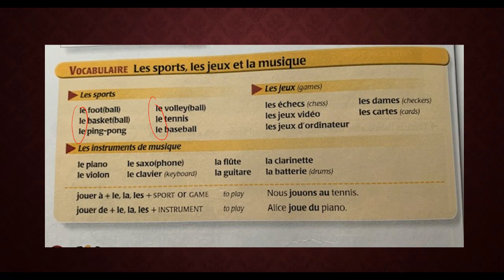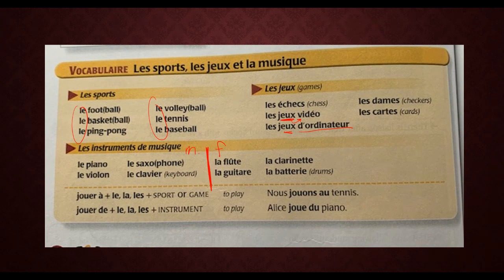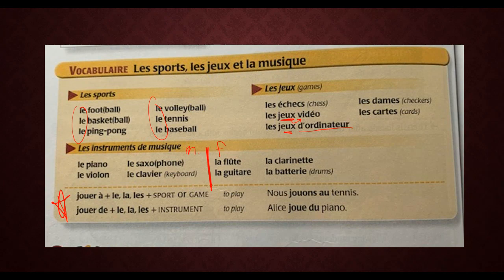Notice how jeux vidéo and jeux d'ordinateur work like adjectives — what kind of games? Video games, computer games. And here are the instruments: le piano, le violon, le saxo, le saxophone, le clavier — those are masculine — and la flûte, la guitare, la clarinette, la batterie — those are feminine. Jouer à is for sports/games; jouer de / de la / du is for musical instruments.